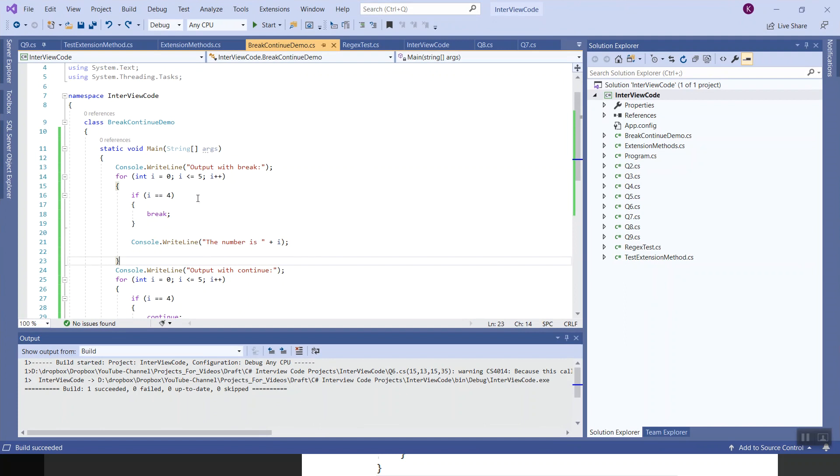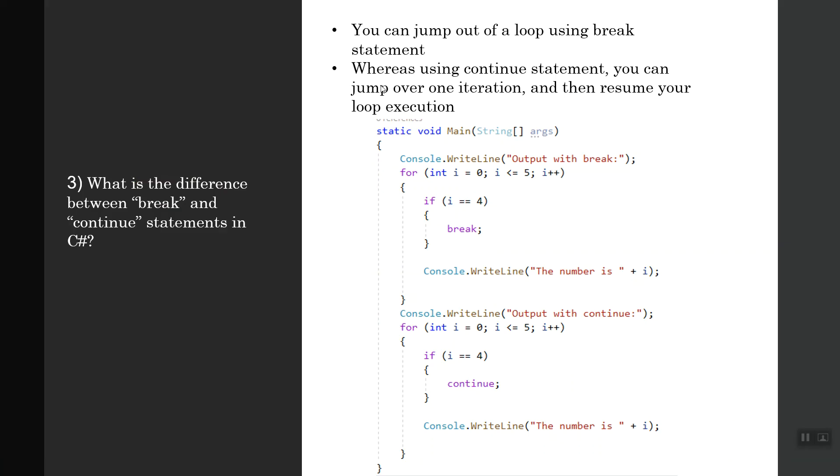We have this code. Within a for loop, if i equals 4, then break. If we recall our statement which says that you can jump out of a loop using break statement, so when it encounters 4, i equals 4, it breaks out. So it would have written zero, one, two, three and then it will break out of the loop.